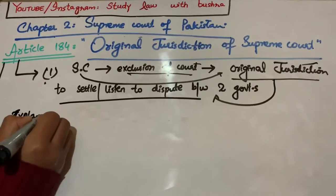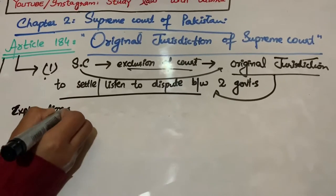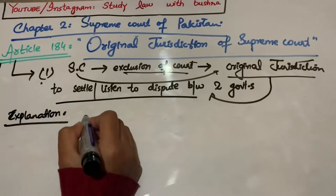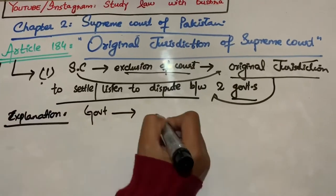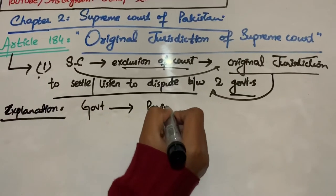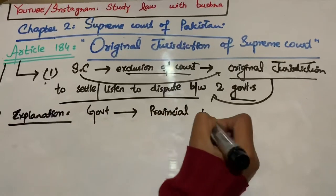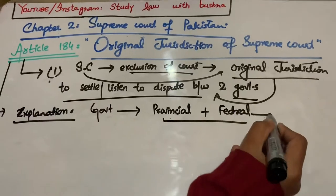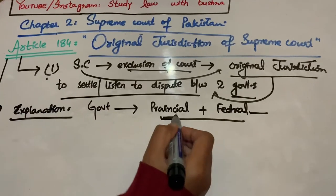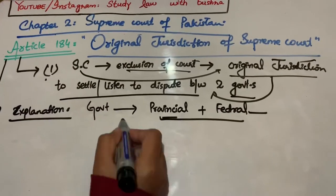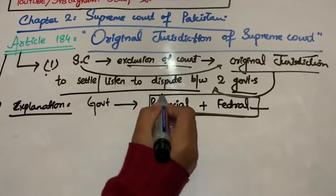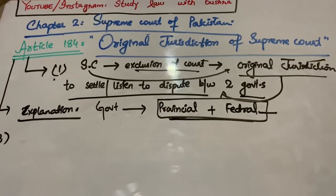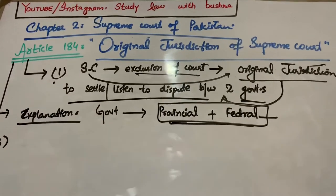یہاں پہ Clause 1 کے اندر لفظ 'Government' کو explain کیا گیا ہے۔ اس سے مراد Provincial Government (صوبائی حکومت) اور Federal Government (وفاقی حکومت) ہے۔